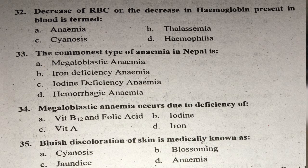Question thirty-four: Megaloblastic anemia is caused due to deficiency of what? Megaloblastic anemia is due to deficiency of vitamin B12 and folic acid. In Nepal, the commonest anemia is iron deficiency anemia.